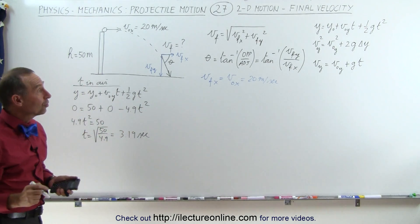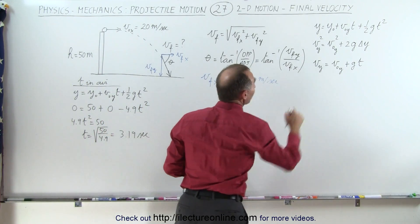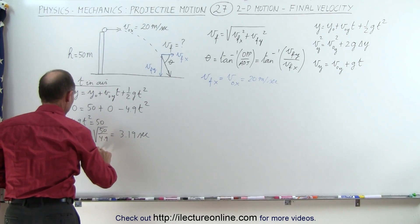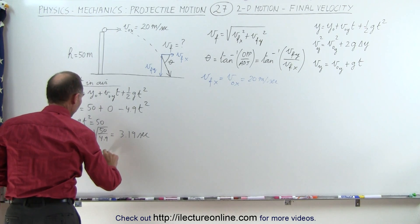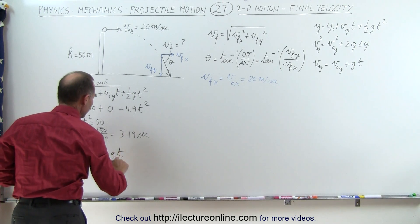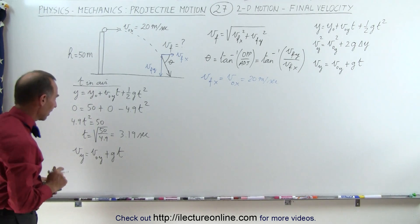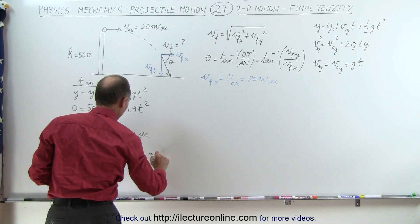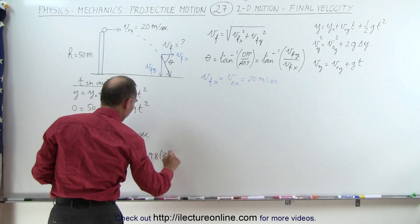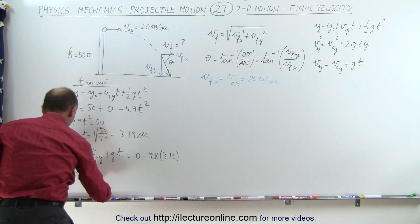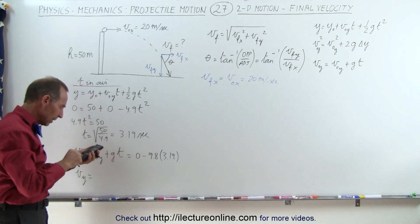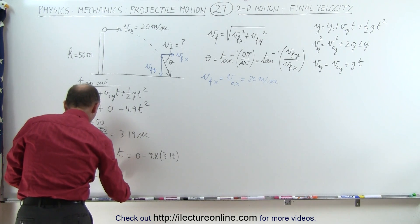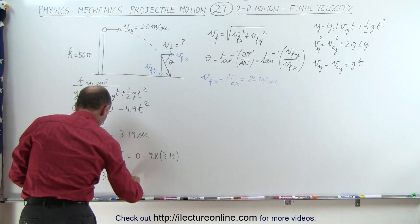Now using the equation v_y = v_y_initial + g·t, and now that we know the time: g = −9.8 m/s², so v_y = 0 + (−9.8)(3.19) = −31.3 meters per second.